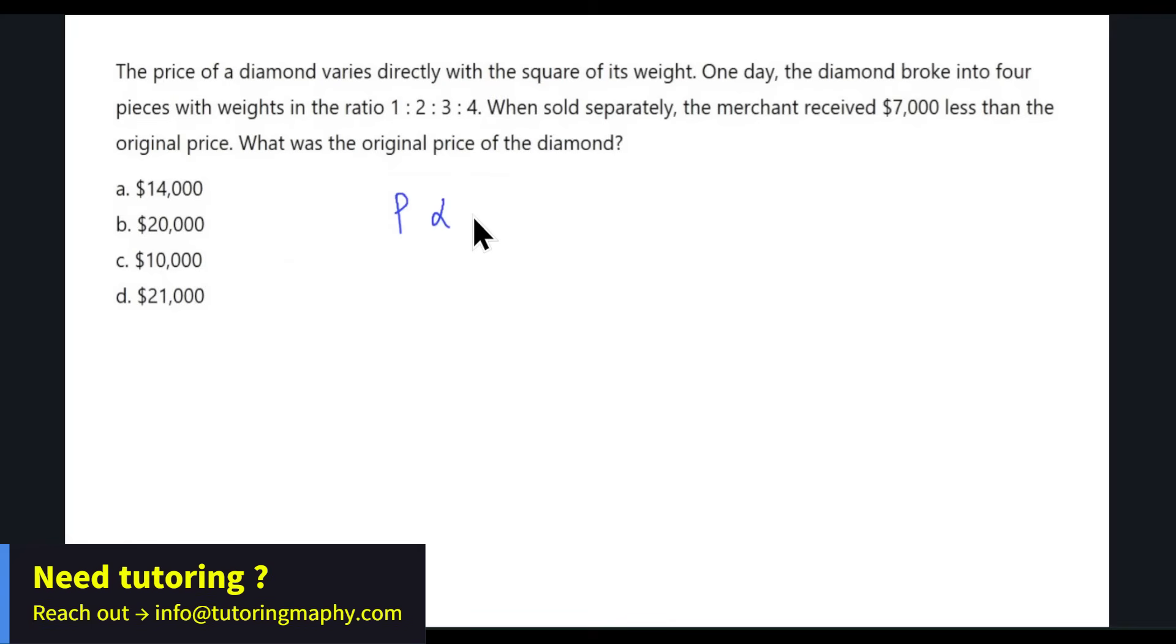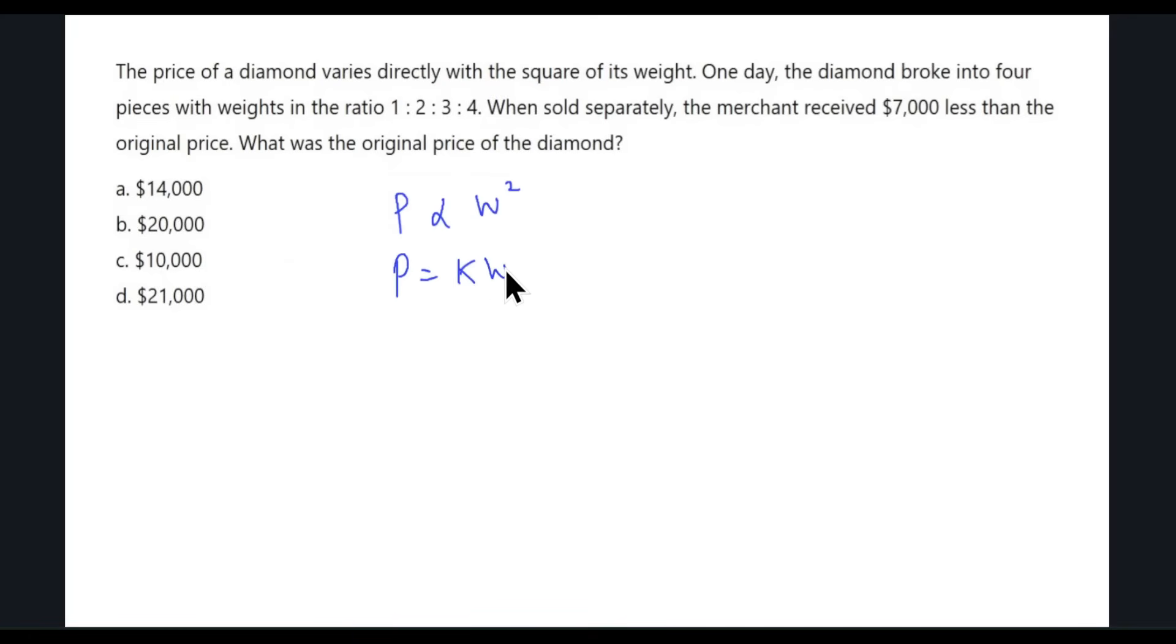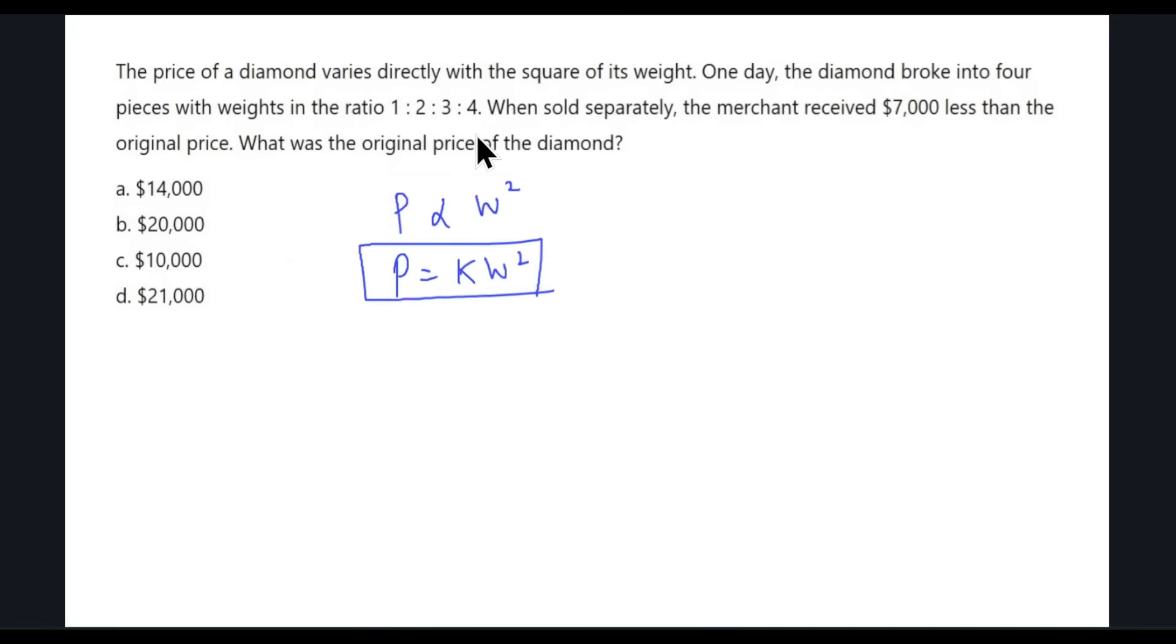The price of a diamond varies directly with the square of its weight. So P equals some constant K times W squared. One day the diamond broke into four pieces with weights in the ratio 1 to 2 to 3 to 4. When sold separately, the merchant received $7,000 less than the original price. What was the original price?